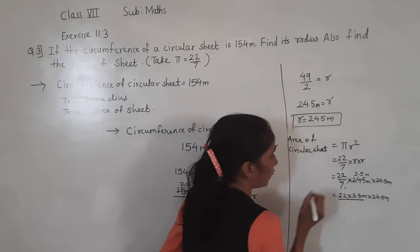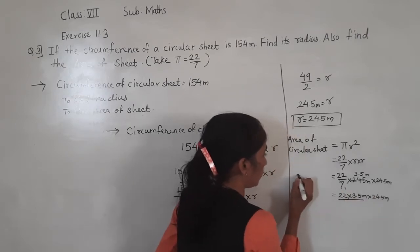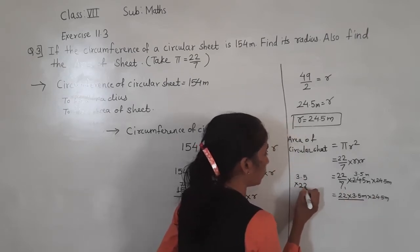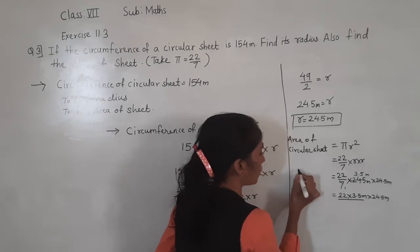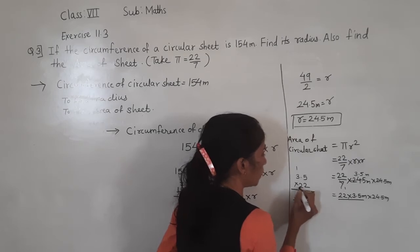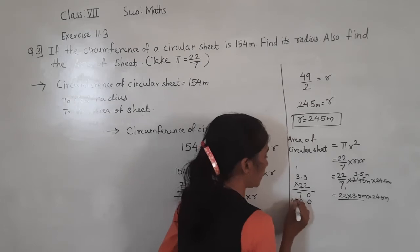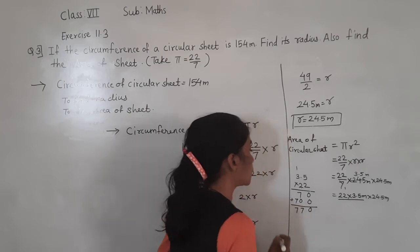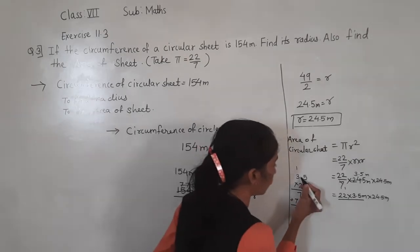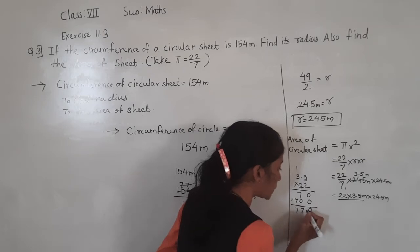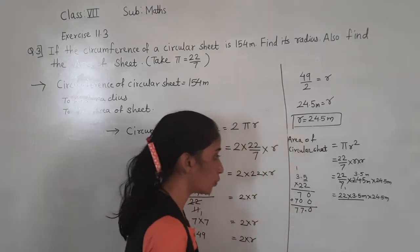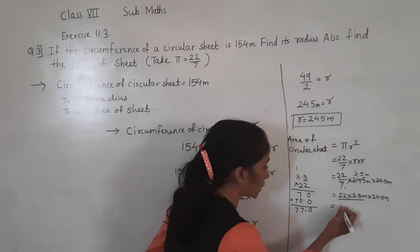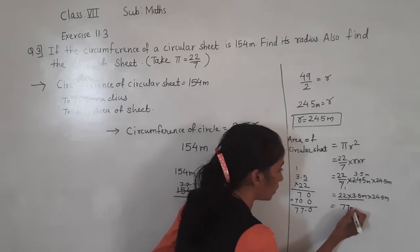Let's multiply 3.5 by 22. 2 × 5 = 10, carry 1; 2 × 3 = 6 + 1 = 7. Plus: 2 × 5 = 10, 2 × 3 = 7. Total: 770. After one decimal digit, 22 × 3.5 = 77. So we now have 77 × 24.5.